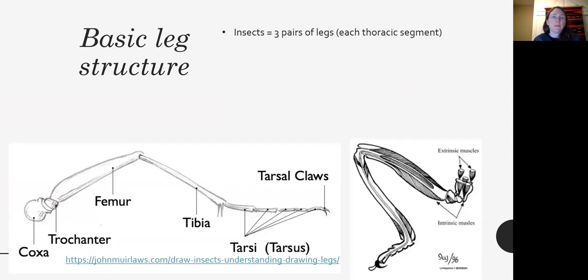To start off with basic leg structure, you have the parts shown in the figure, the coxa, trochanter, femur, tibia, the tarsi and the tarsal claws. And in insects, they have three pairs of legs and each pair of legs is attached to the different thoracic segments.